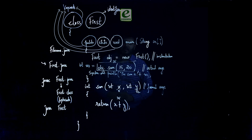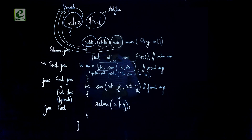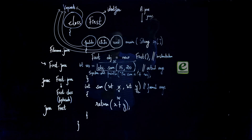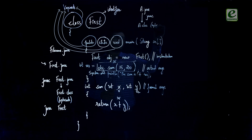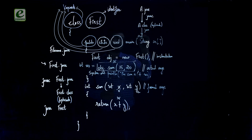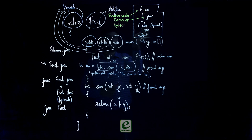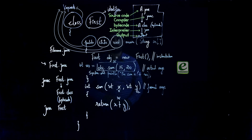Once you have the bytecode, execute it using the Java interpreter: 'java first'. When you hit Enter, the main method starts executing and the program's output is shown on the screen. To summarize: you start with a '.java' source file, compile it with 'javac' to get a '.class' bytecode file, then execute with 'java' to get the output. Source code → compiler → bytecode → interpreter → output. Thank you, we will continue with more interesting Java videos.